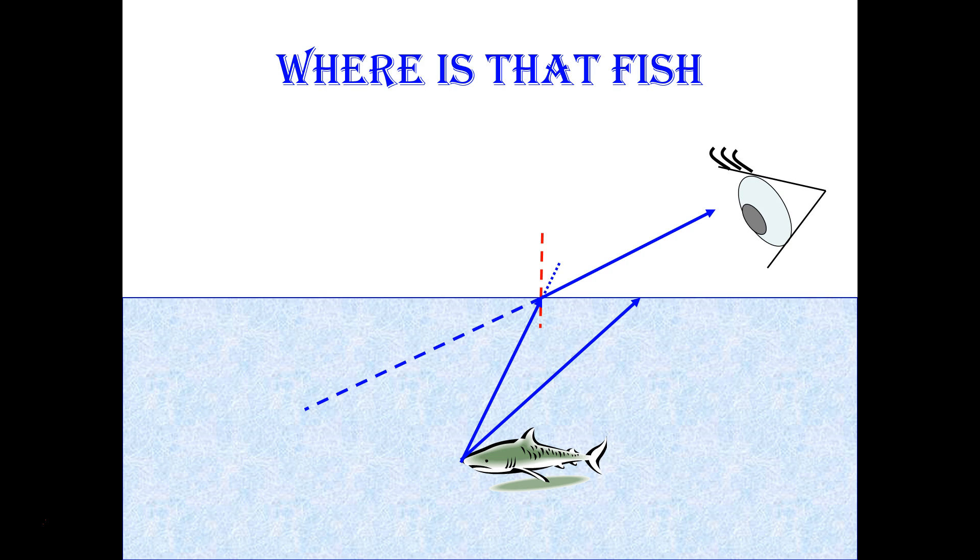So casting that ray that you receive, the emergent ray that arrives at your eye, casting that back into the water, we find that our fish is shifted to one side. And in this case, actually a little bit shallower as well, a little bit toward the surface of the water.